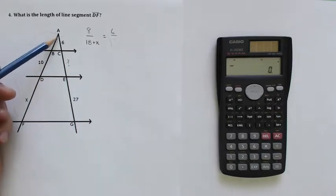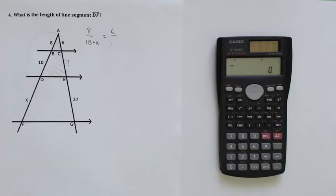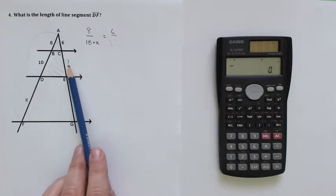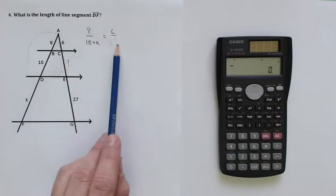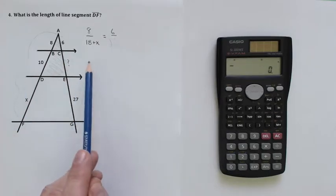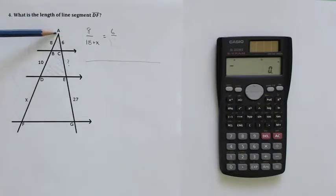So that means I have to stop, and I've got to deal with this triangle first to get this missing piece so that I can then get that side there. So I'm going to put my initial one on hold. This is to this, so 8 is to 18 plus X, as 6 is to, hey, I'm missing a part.